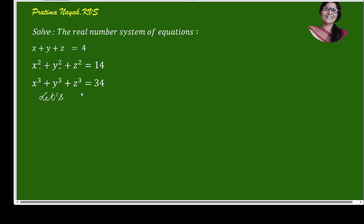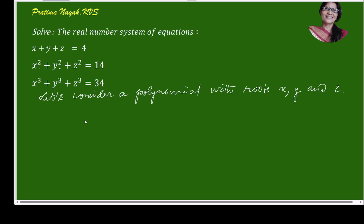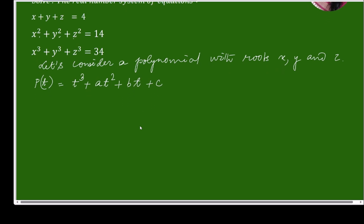Let's consider a polynomial with roots x, y, and z. Since there are three roots it is a cubic polynomial, so let's write it as t³ + at² + bt + c. By the properties of roots of a cubic polynomial, x + y + z equals minus the coefficient of t² upon the coefficient of t³.